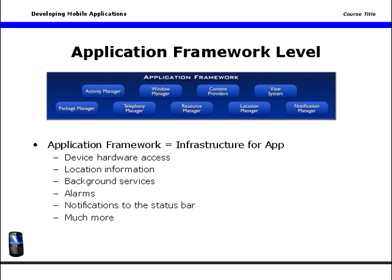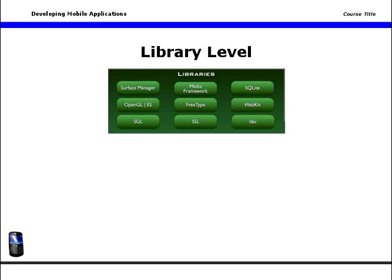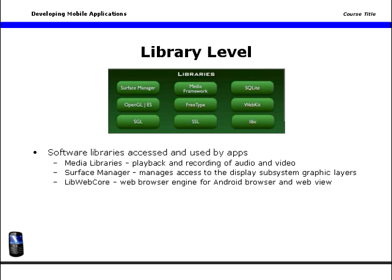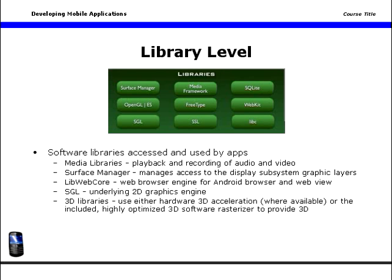One level deeper, the software libraries level provides functions that can be accessed and used by your apps, including media libraries for playback and recording of audio and video, a surface manager which manages access to the display subsystem graphic layers, a live web core — a web browser engine for the Android browser and for web views in Android — an SGL underlying 2D graphics engine, and 3D libraries which use either hardware 3D acceleration where available, or the included highly optimized 3D software rasterizer to provide 3D.